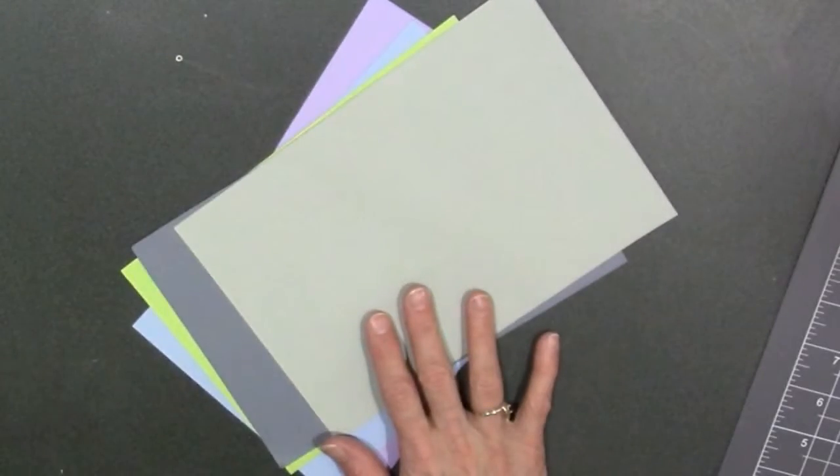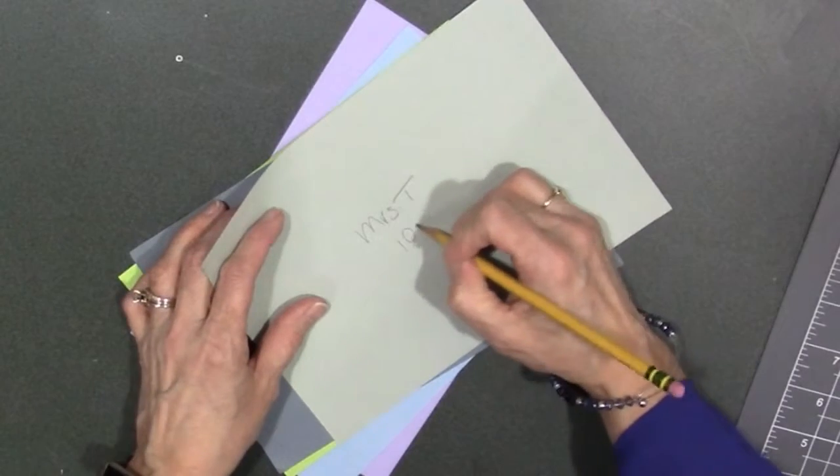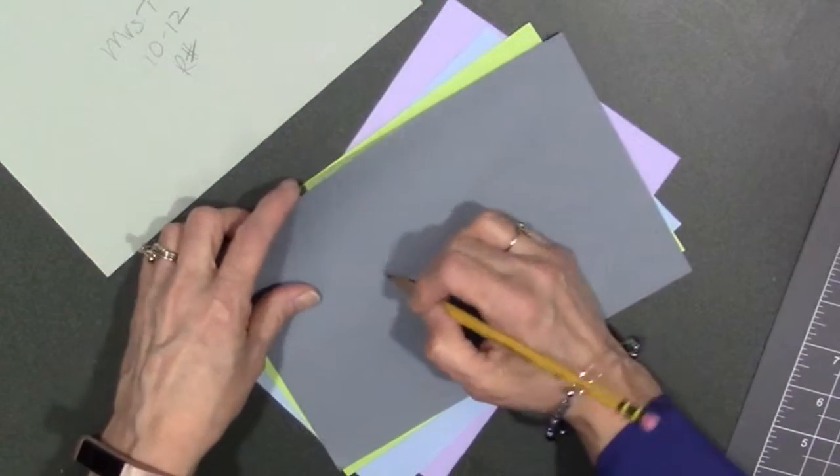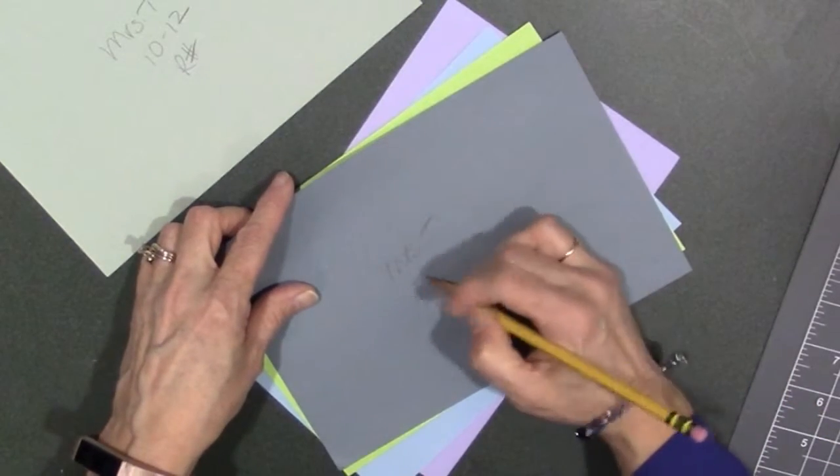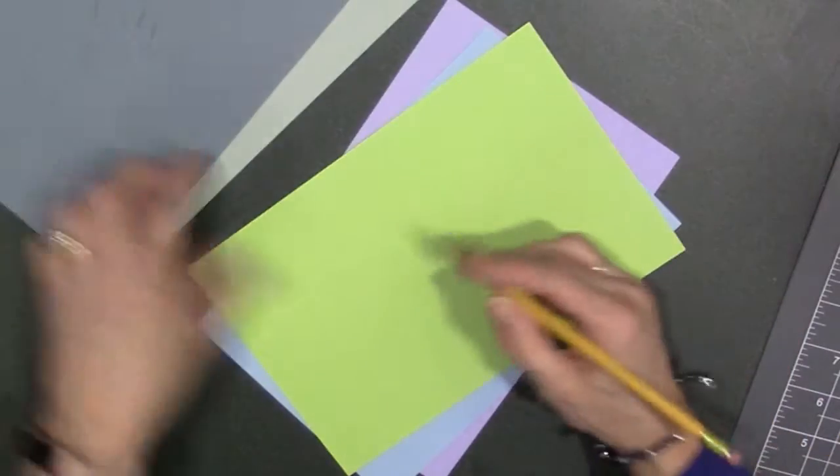And on one side, you're going to write your name and your mods and your row number, please, so that we can return these back to you really quick. All five of them in pencil.